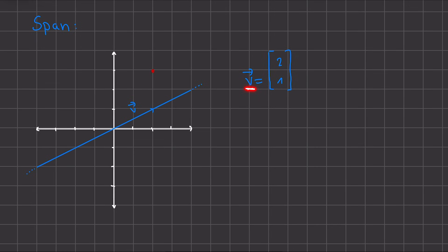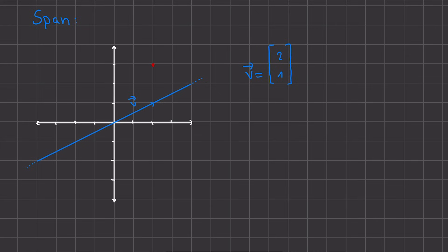Since it's just one vector, we do not add with other vectors, but we just use scalar multiplication. Now, scalar multiplication, if you remember, does either a stretching or a shrinking of this vector. And in fact, if we have a negative scalar, it even reflects it so that the vector points in the opposite direction.